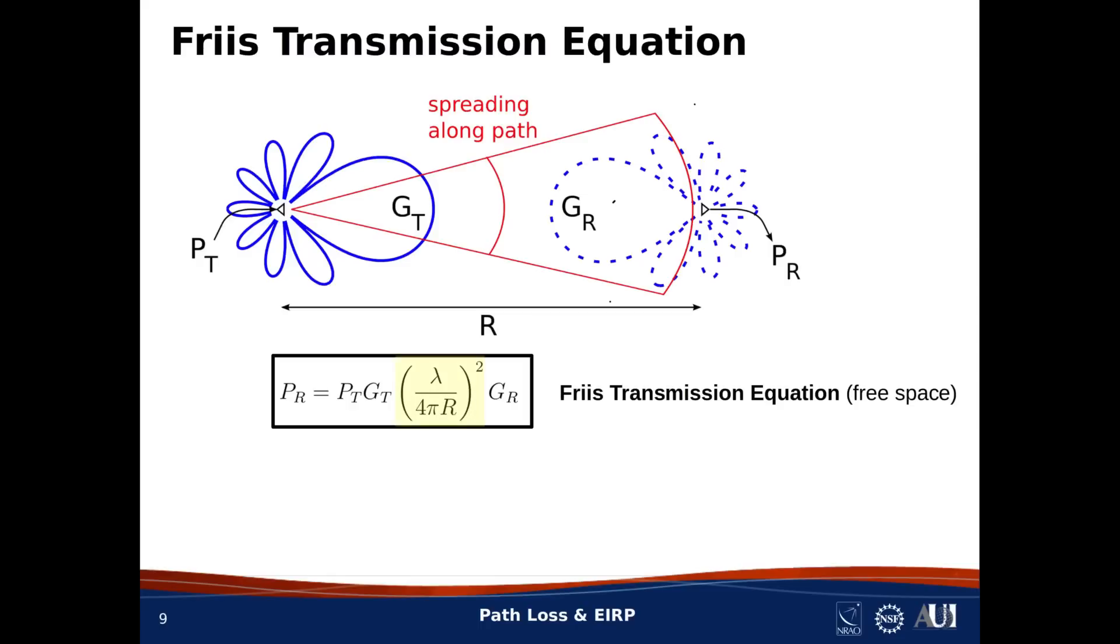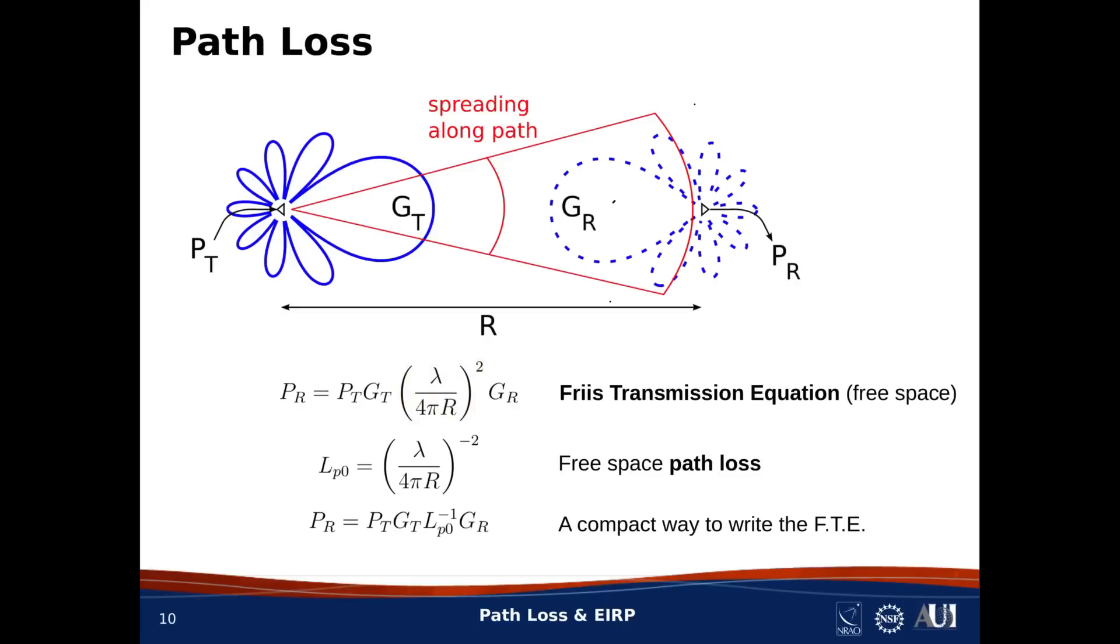Now, note that the equation includes a factor of wavelength divided by 4 pi R quantity squared. It's convenient to give that factor a name, and formally that name is path gain. But almost nobody calls this path gain. Instead, we define the reciprocal of this quantity, and we call that the path loss. So here you go. We define L sub P naught to be the reciprocal of wavelength divided by 4 pi R quantity squared, as we've shown here. And we refer to this quantity as free space path loss.